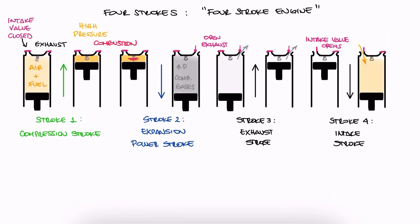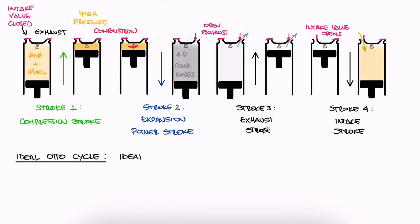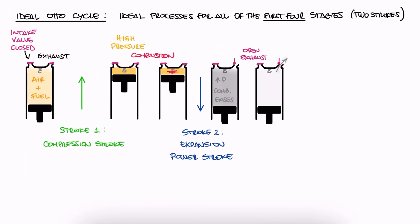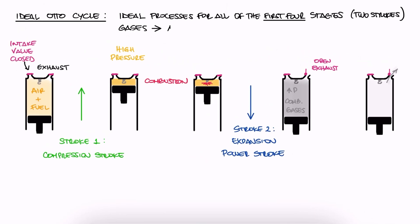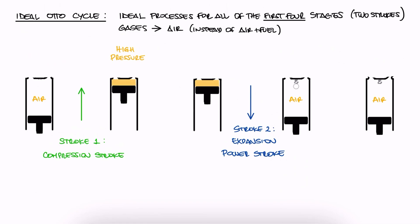The ideal Otto cycle adds ideal conditions to some of these stages and even the steps between stages. The cycle takes into account the first two strokes only, and to simplify it, it assumes that the gases are air only, and that instead of the combustion and the release of gases, there's just heat being added and removed from external sources. This simplification of an open system to a closed system is very similar to what we described in the Brayton cycle 11-minute lecture.